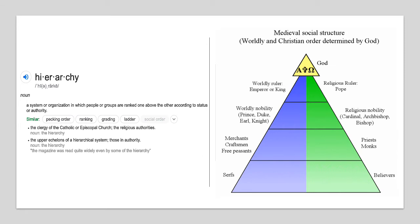In Europe, two key hierarchies grow out of the fall of Rome. The first, thanks to the need for freedom and protection: the prince, duke, earl, classmen, and serfs at the bottom. The second is the religious hierarchy: the pope, the rulers, the priests, the monks. And this becomes ingrained in European society for nearly a thousand years.